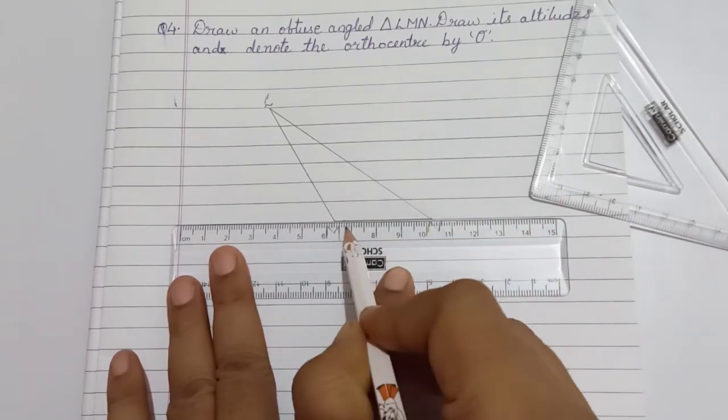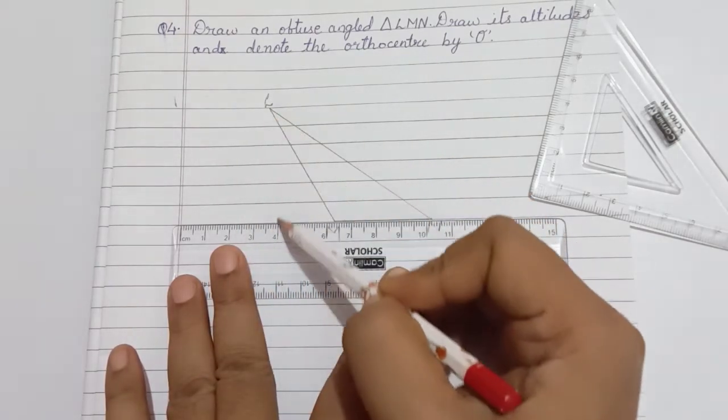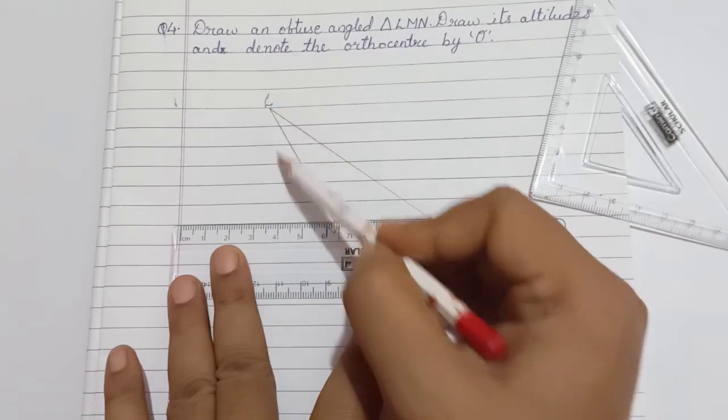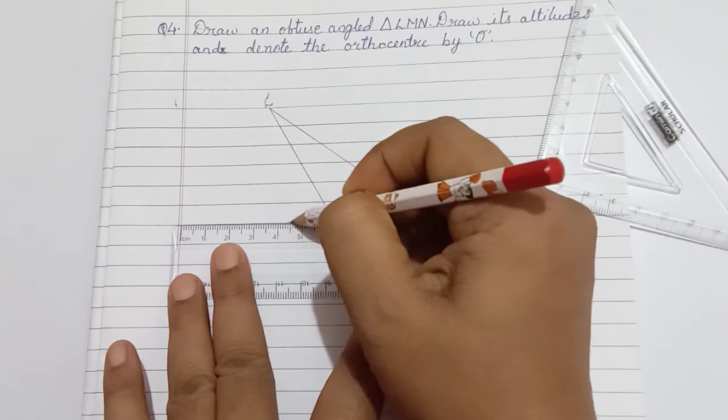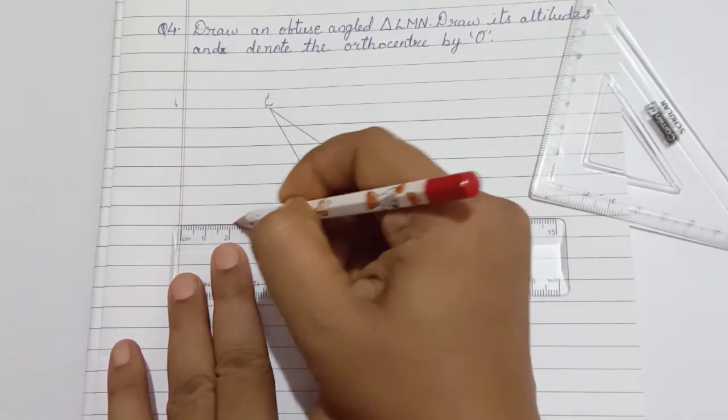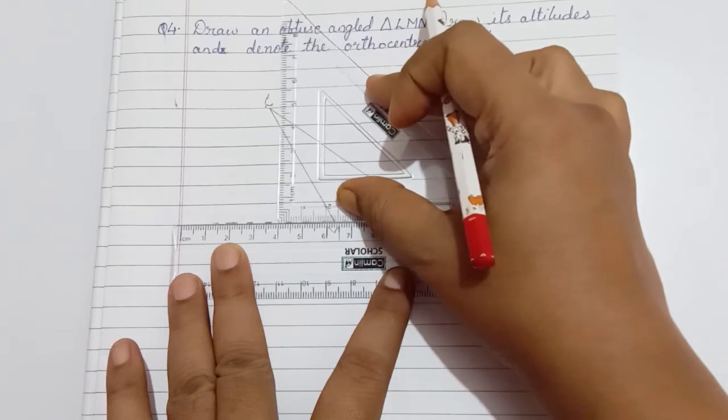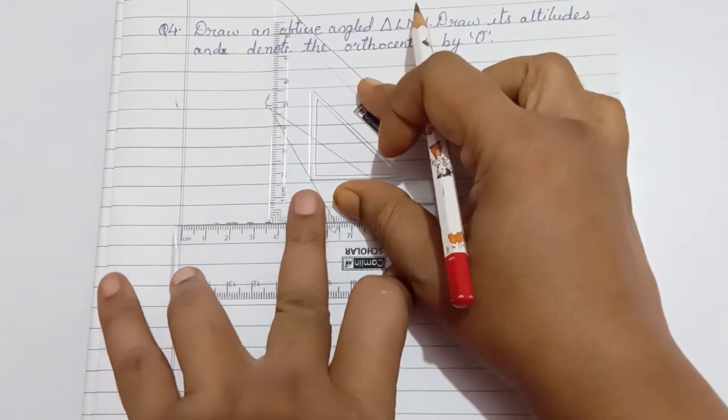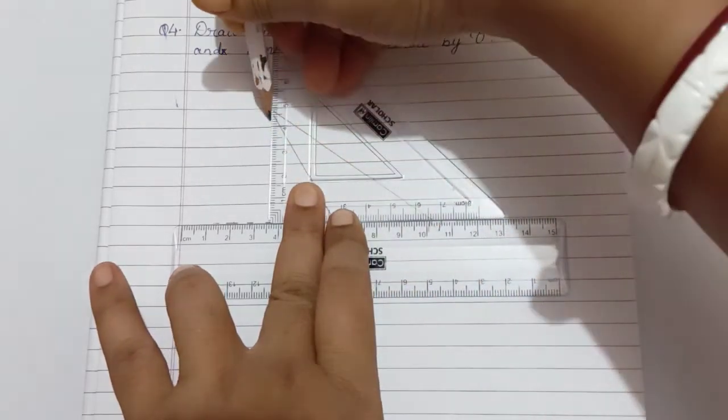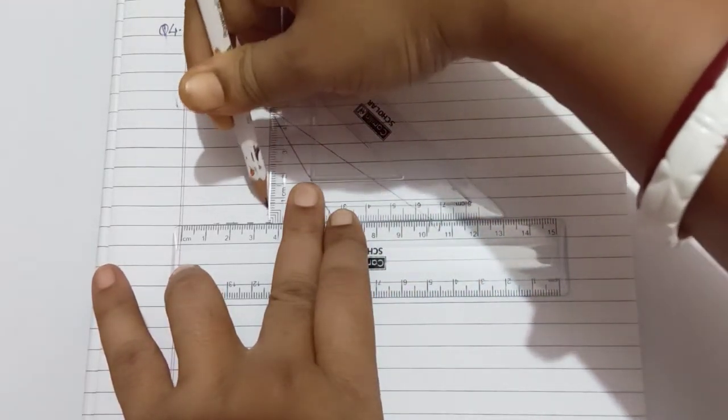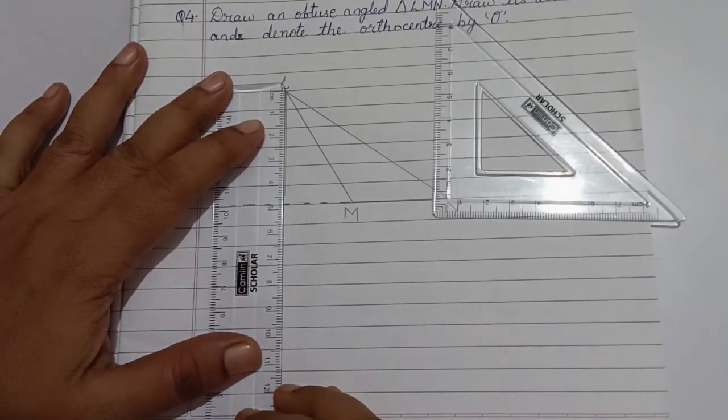Extend the line MN on the other side as the opposite vertex is just below the line here. With dotted lines, we are extending line MN. Now, bringing or sliding the set square to point L. Holding the place of the set square and dropping the altitude. This gives you the first altitude.